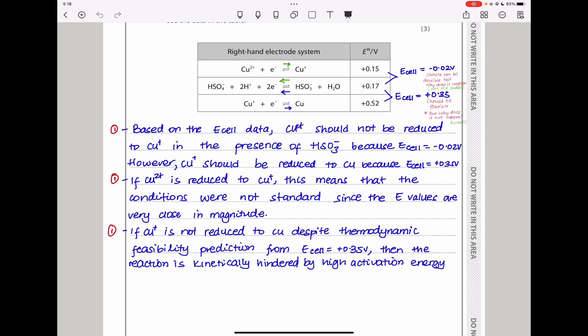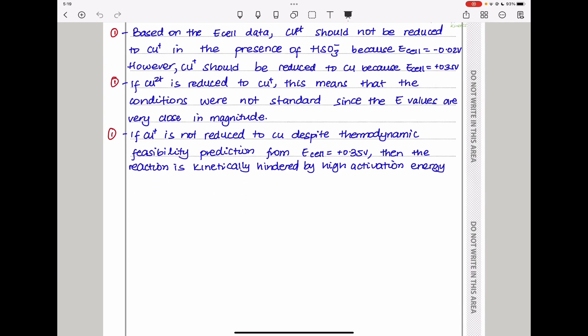My answer was, based on the E cell data, copper(II) should not be reduced to copper(I) in the presence of hydrogen sulfate because the E cell is negative 0.02 volts. However, copper(I) should be reduced to copper because the E cell is positive 0.35 volts. If copper(II) is reduced to copper(I), this means that the conditions were not standard since the E values are very close in magnitude. If copper(I) is not reduced to copper despite thermodynamic feasibility prediction from the E cell, then the reaction is kinetically hindered by a high activation energy.